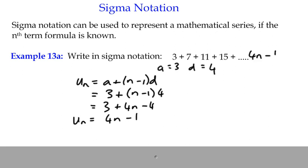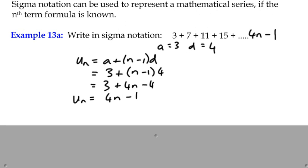Effectively, the nth term is 4n minus 1, and so what we can do is actually represent this number series, 3 plus 7 plus 11 plus 15 and so on. We could shorten that to say it's the sum of all the terms in the series,